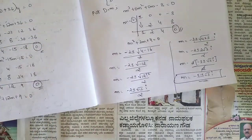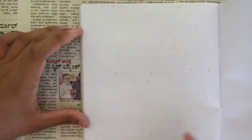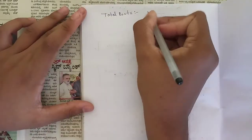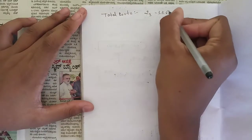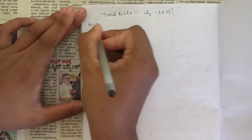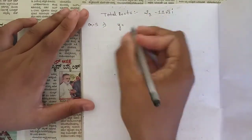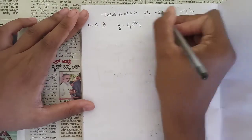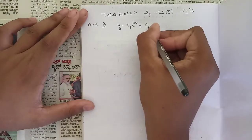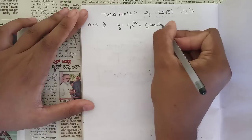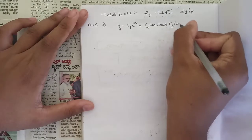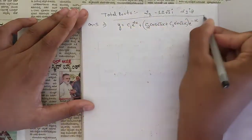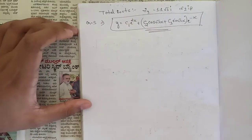The total roots are: m = 2 and m = −1 ± √3 i. This is of the form α ± βi where α = −1 and β = √3. The general solution is: y = C₁e^(2x) + (C₂cos(√3 x) + C₃sin(√3 x))e^(−x). This is the required general solution.